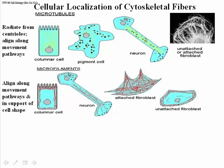Whether a fibroblast is attached or unattached, the distribution of microtubules is going to be pretty much the same. So it's the microfilaments that rearrange and allow cells to change shape readily when they are attached versus when they're unattached.